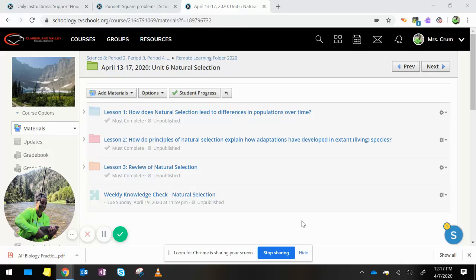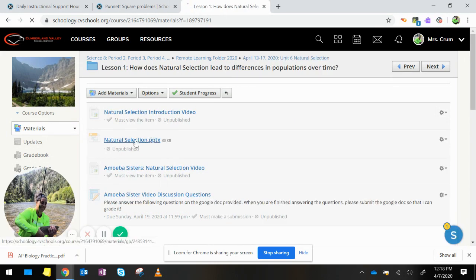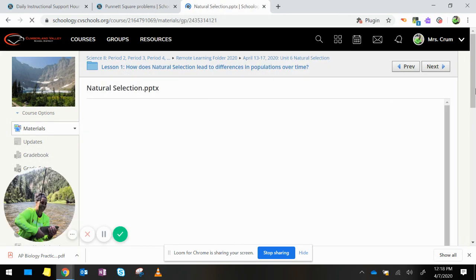Hi everyone, this lesson is actually going to be a review of what we have already covered this week. If you remember, the first lesson, Lesson 1, was on how does natural selection lead to differences in populations over time.